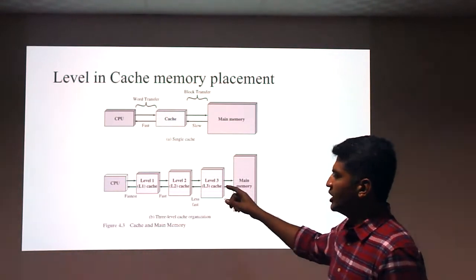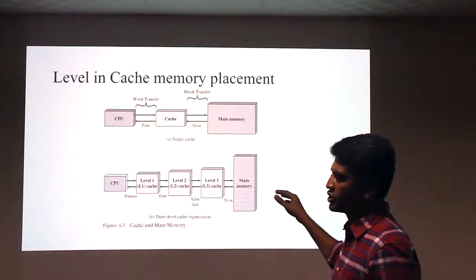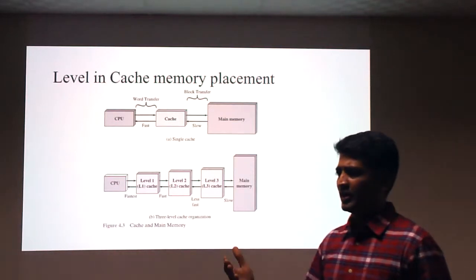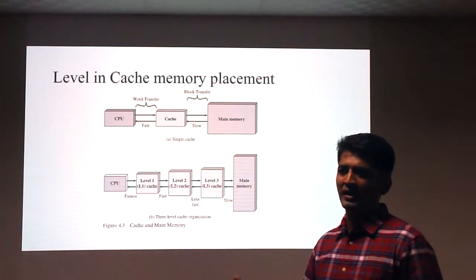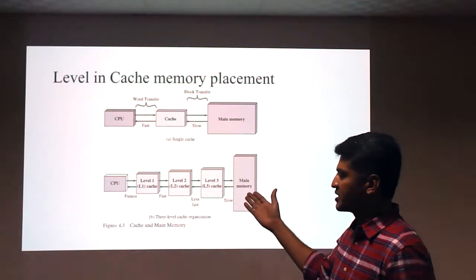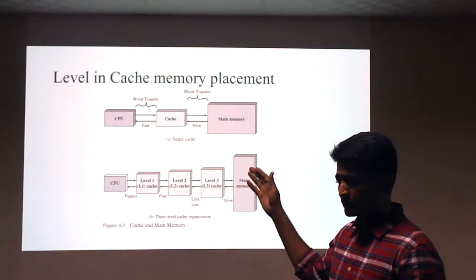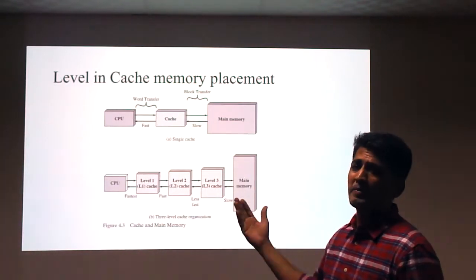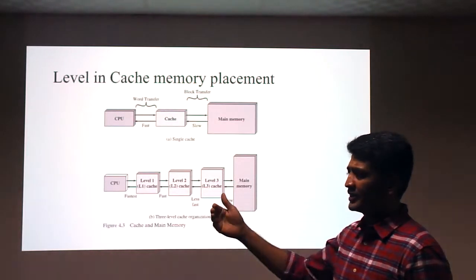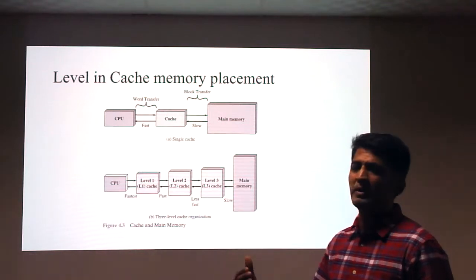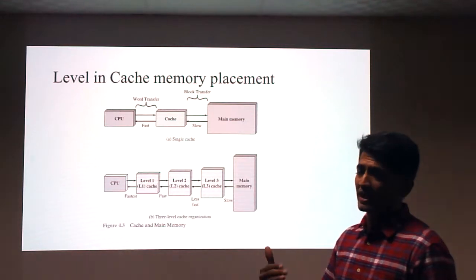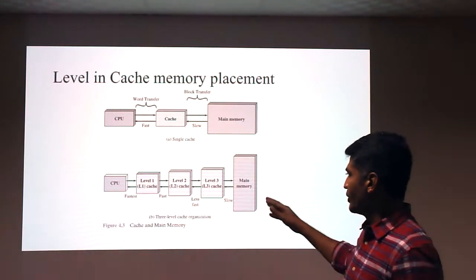The second diagram shows the levels of cache memory. There is on-chip cache memory and off-chip cache memory. On-chip cache memory is the Level 1 (L1) cache, placed inside the processor. The speed decreases by level: L1 cache is fastest, L2 is a little slower, and L3 is slower still.